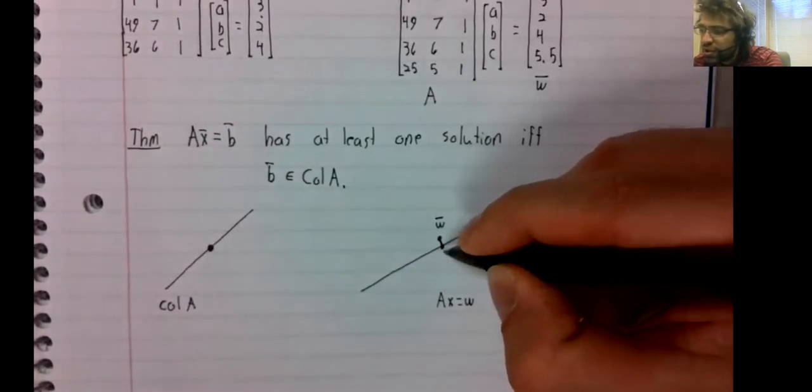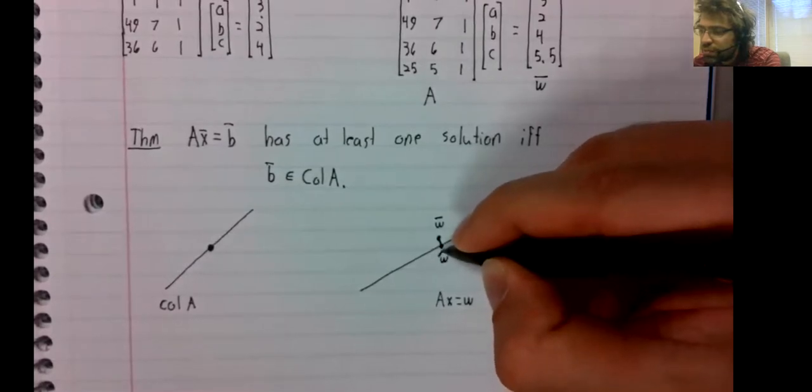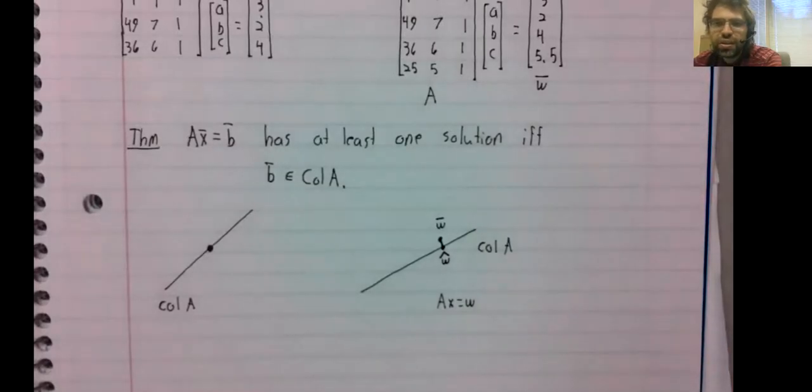The point in the column space that W is nearest to is its orthogonal projection.